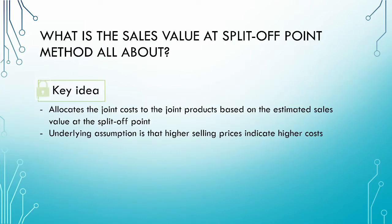So what is the sales value at split-of-point method all about? The key idea behind this method is that the joint costs are allocated to the joint products based on their sales value at the split-of-point — the point where the products become separately identifiable for the first time. It is important to note that we are not splitting the joint costs based on per-unit selling price, but rather the total sales value of all the units produced. The assumption underlying this method is that higher selling prices indicate higher costs. Thus, we expect joint products with higher total sales value to be allocated more of the joint cost.